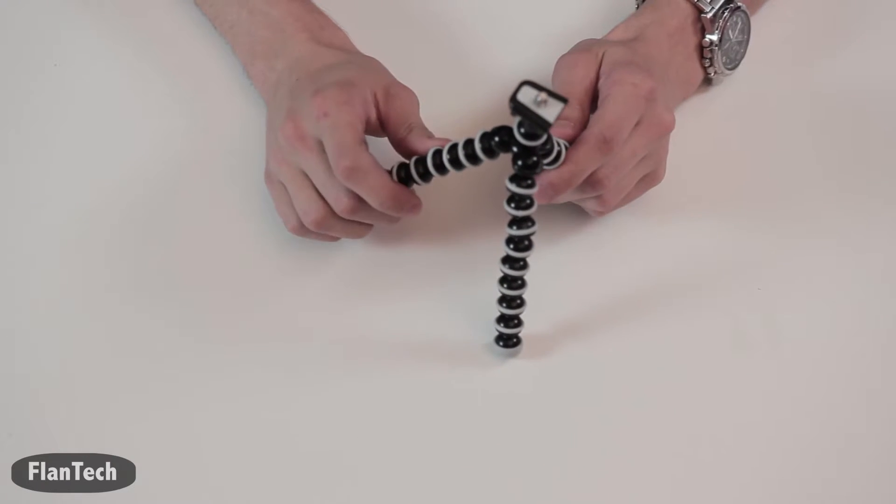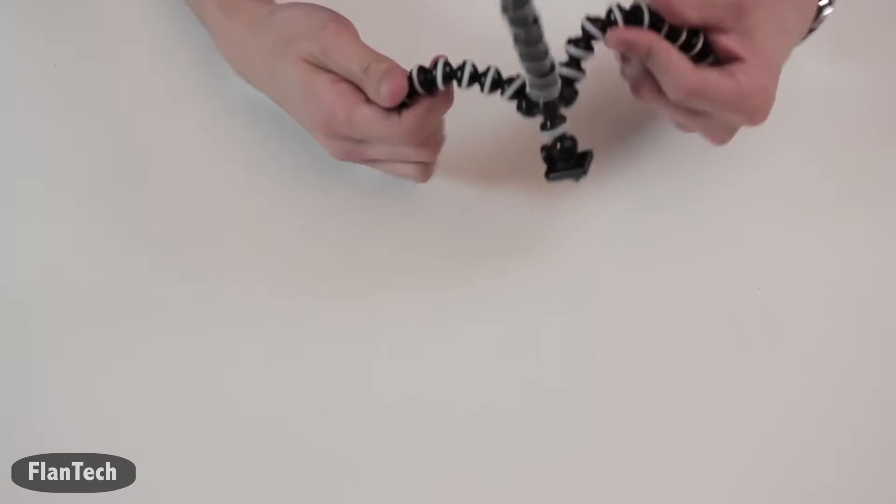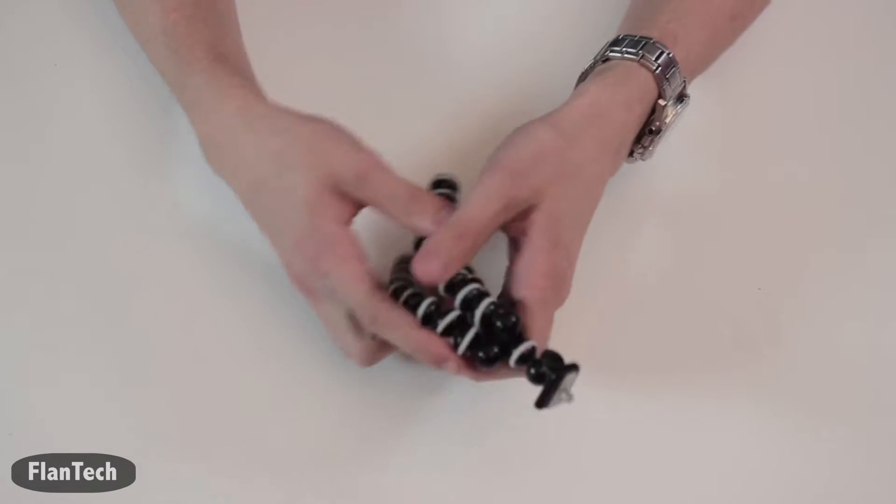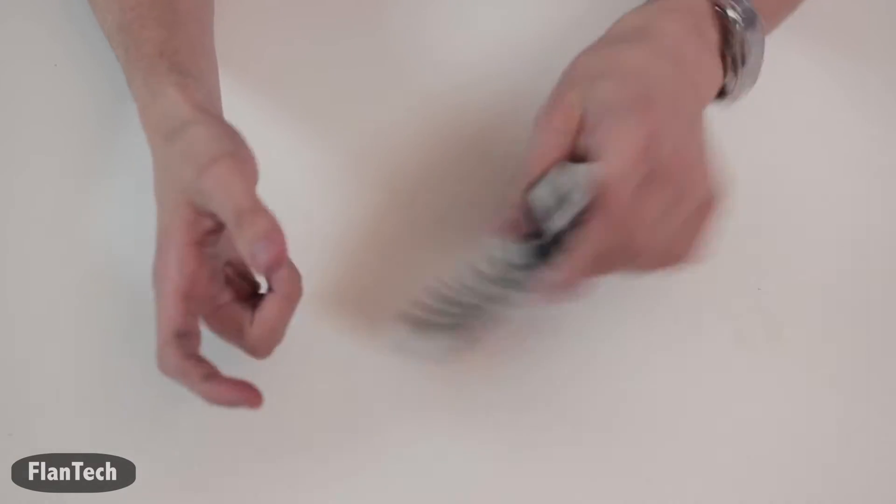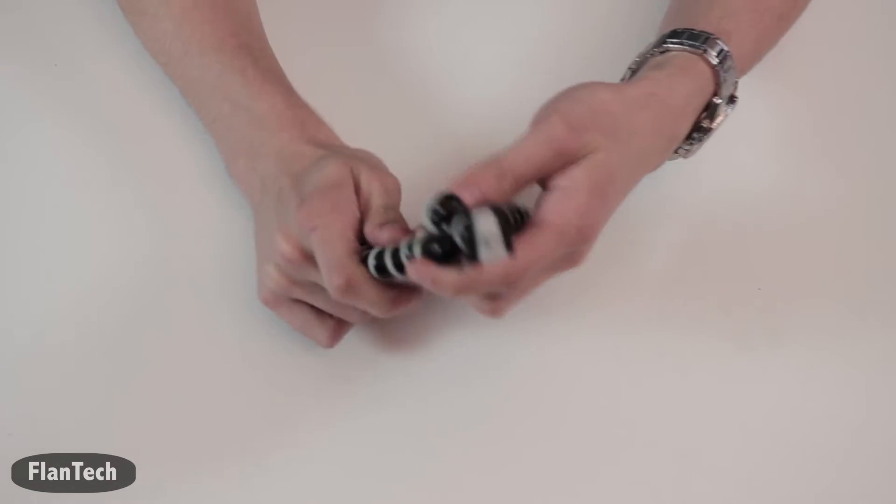But I mean it can do all sorts of stuff. It can wrap around whenever you want. I recommend it for small cameras like a GoPro or a point-and-shoot camera. You know, if you bend it it'll stay like that. It's not gonna roll around, it's nice and sturdy.